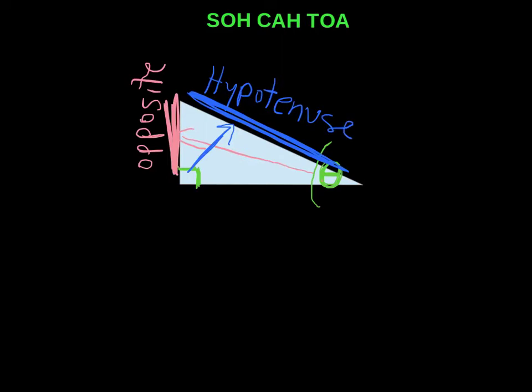And then thirdly, we have this side left over. This side is the adjacent side. And it's basically, it's beside the angle. So the way I like to look at it, it's the side that has the angle that we care about, and the square of our triangle. So that's your opposite, hypotenuse, adjacent.